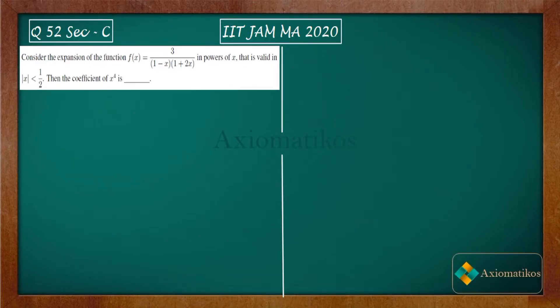Hello dear students, welcome to Axiomatic. This video is part of the solution series for IIT JAM 2020. We are here with Problem 52 of your paper, which is from Section C — that is why it is a numerical answer type. Have a look: consider the expansion of the function f(x).